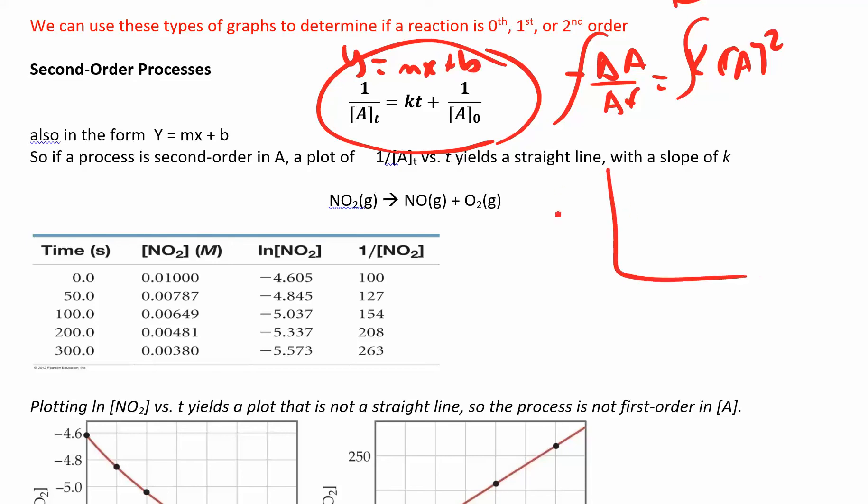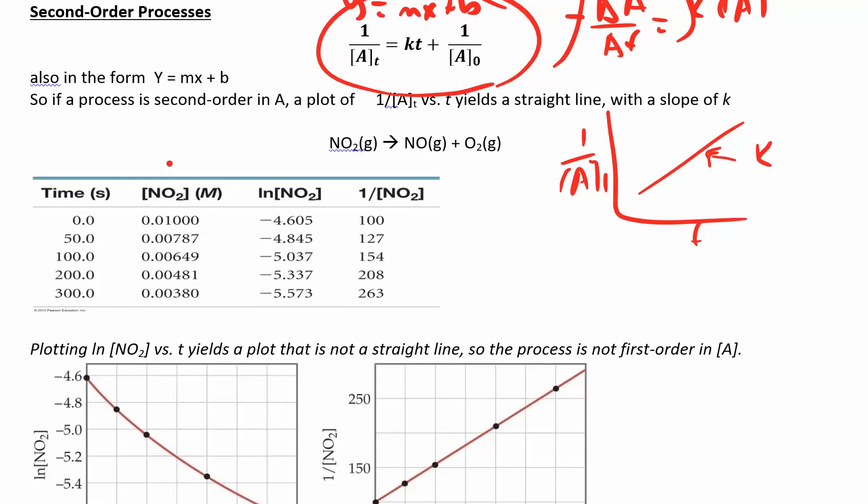But now you're going to plot what over here? You have one over A at some time versus time, and your slope is positive. You get a positive K here. So if you were to measure these concentrations of some reactant over the course of a reaction, you have different times, you have concentration.